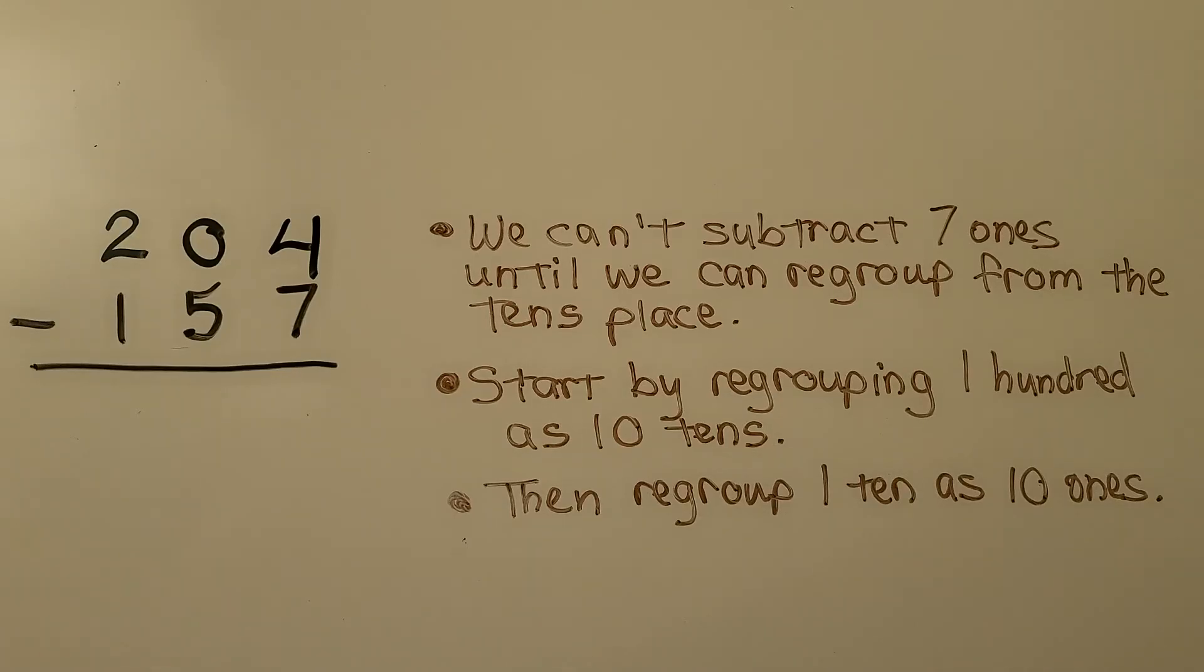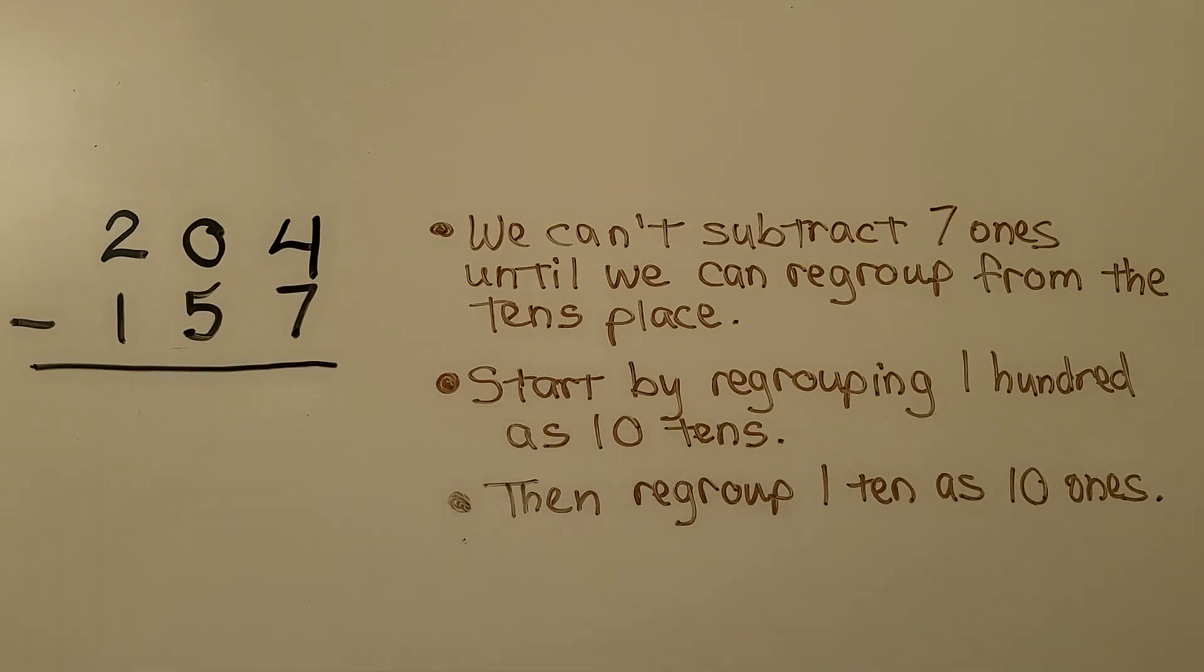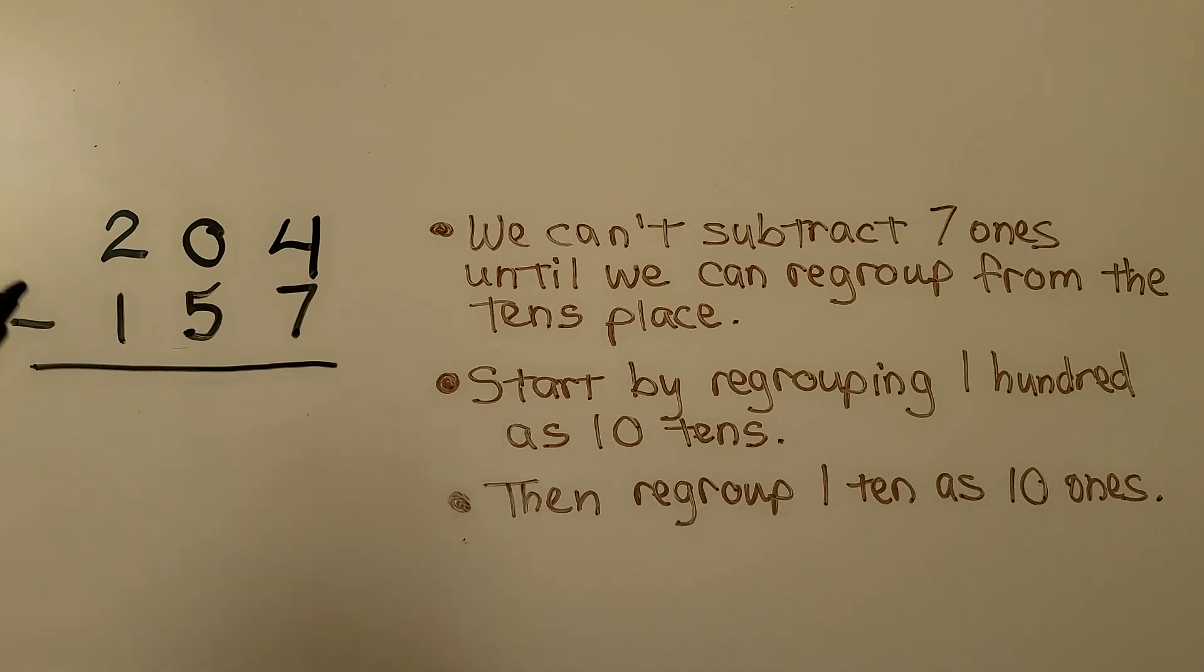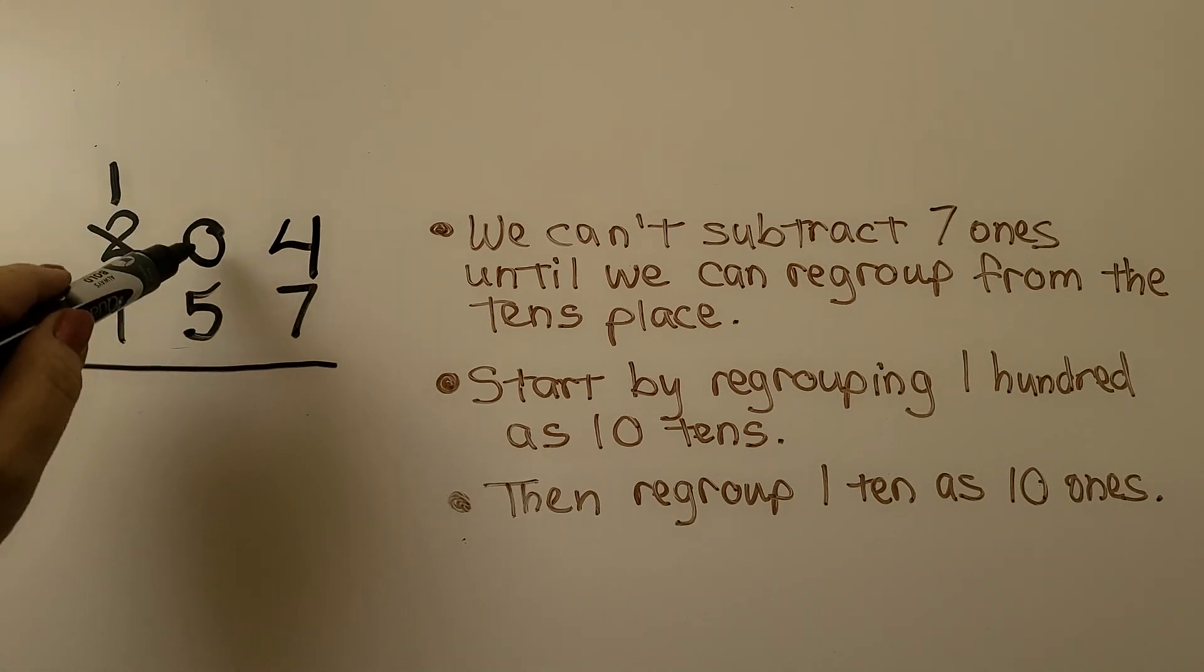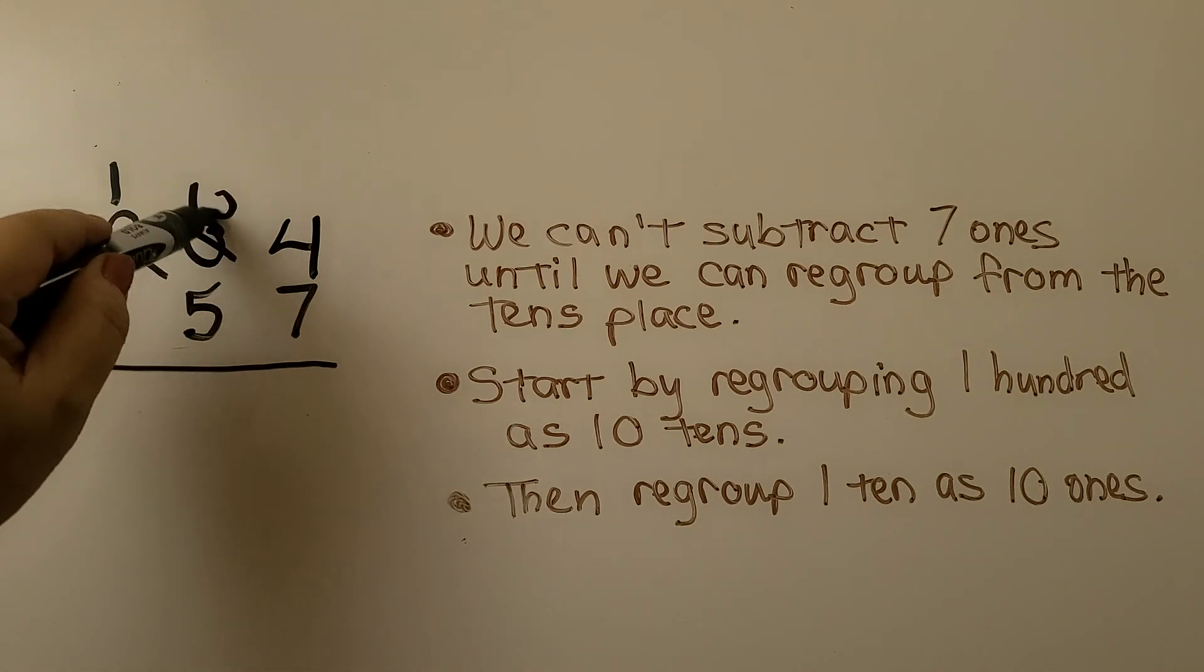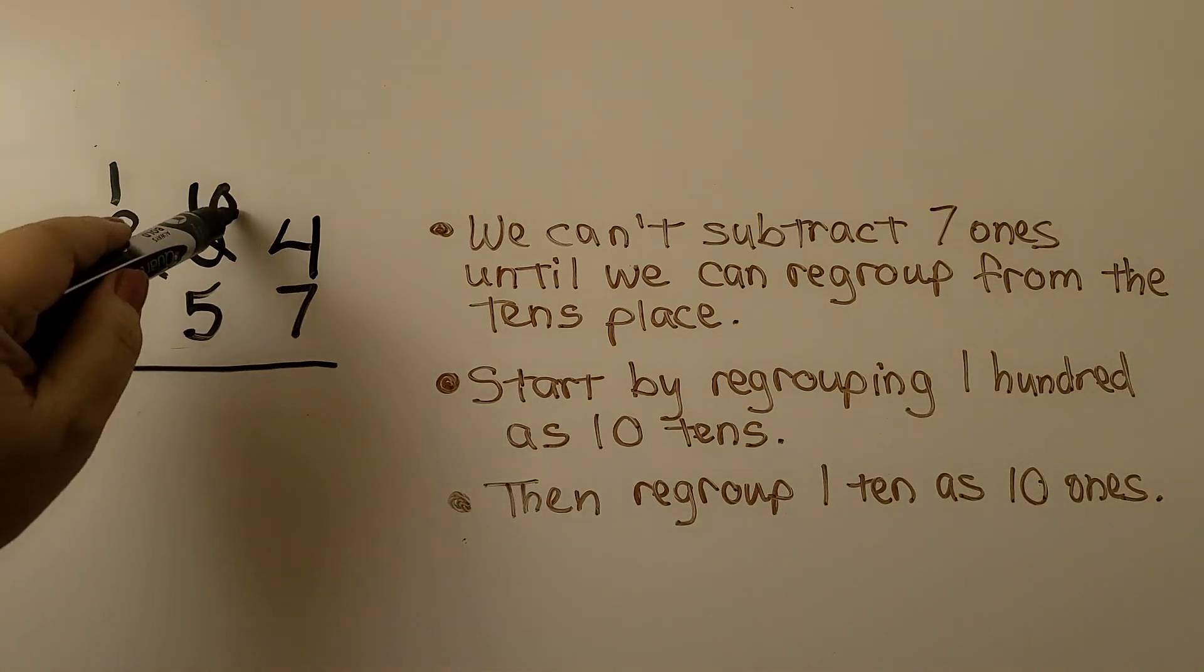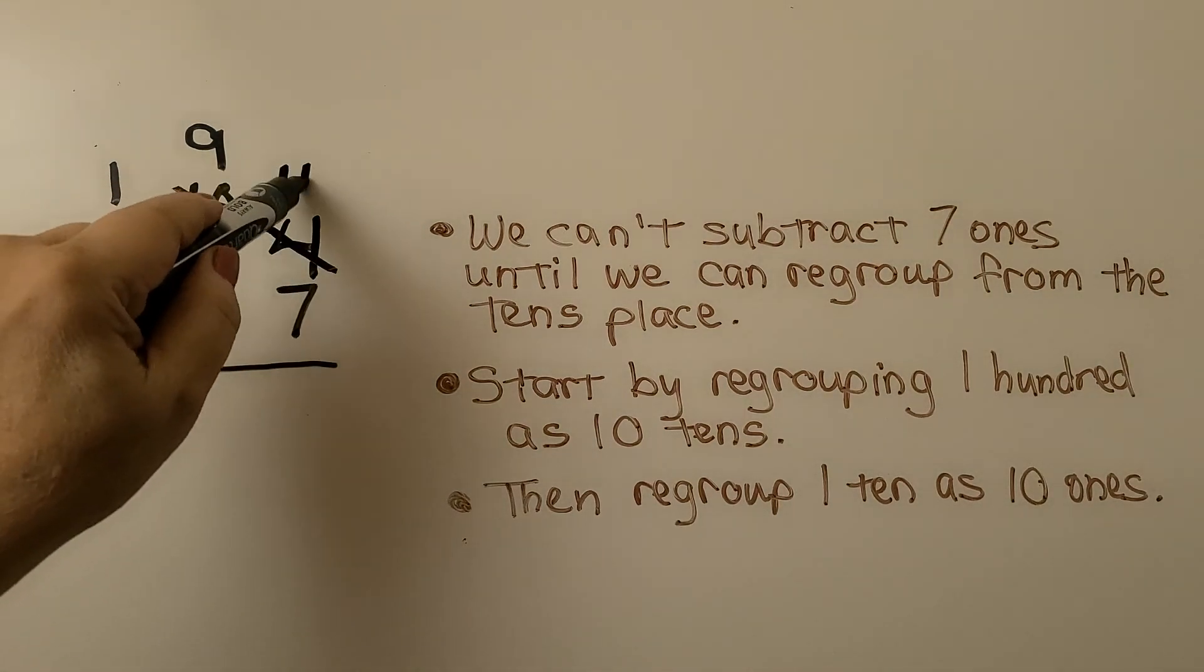Here we have two hundred four minus one hundred fifty-seven. We have four ones, and we need to take away seven ones. But we can't subtract seven ones until we regroup from the tens place. And we can't because there's a zero there. So we start by regrouping one hundred as ten tens. Instead of two hundreds, we now have one hundred. Instead of zero tens, we have ten tens. Now we can regroup for the ones. We turn this into nine tens and give it to the ones place. Now instead of four ones, we have fourteen ones.